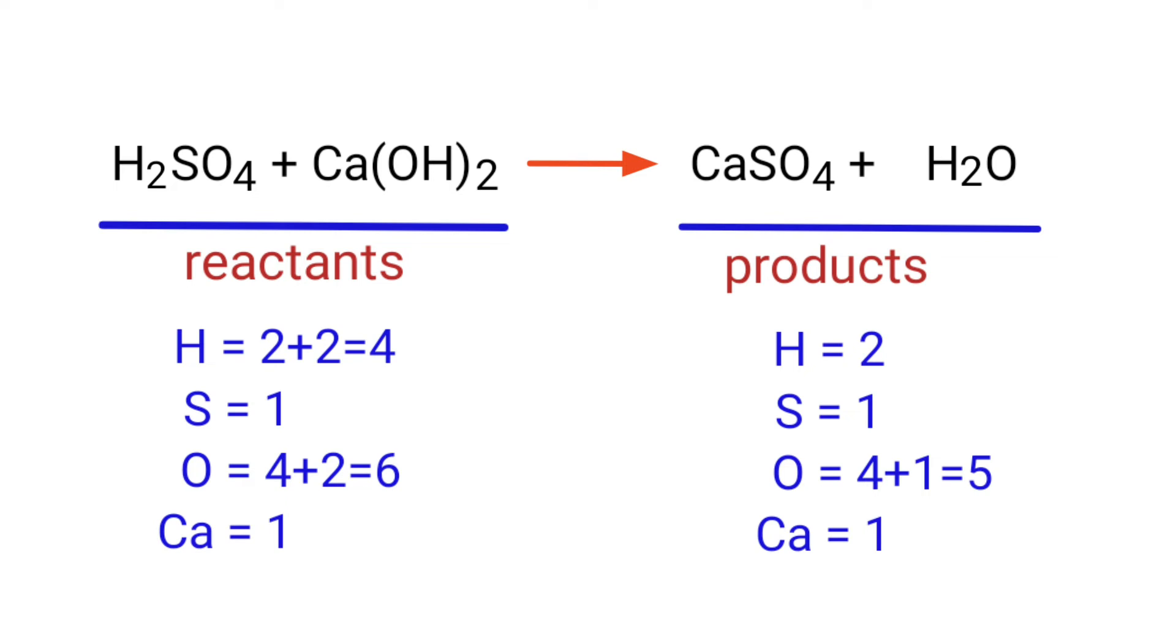In this equation we need to balance the hydrogen and oxygen atoms. To do this we need to put a coefficient of 2 in front of H2O.